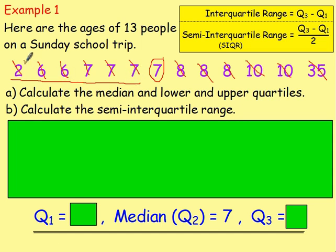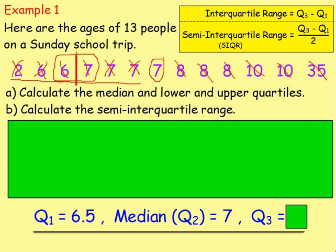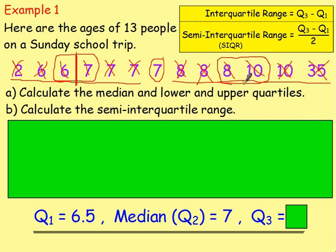We want to find the number in the middle of the lower set. Cross off one from the left and one from the right, and we find two numbers in the middle. With two numbers, we take the number halfway between them — between 6 and 7 we have 6.5. For the upper quartile, looking at the upper set — 8, 8, 8, 10, 10 and 35 — cross off one from each side, and there are again 2 numbers in the middle: 8 and 10. The number halfway between them is 9. So Q1 is 6.5, the median (Q2) is 7, and Q3 is 9.